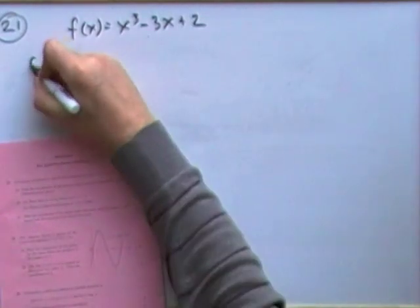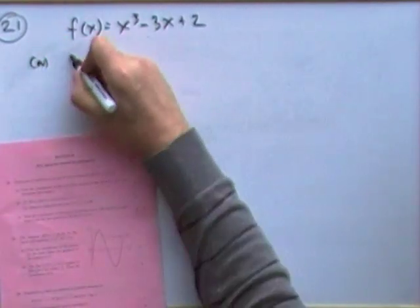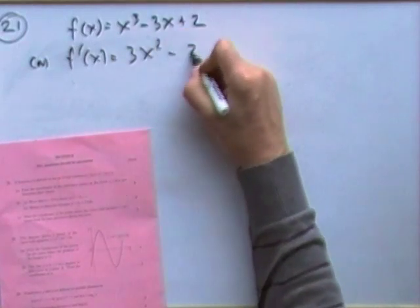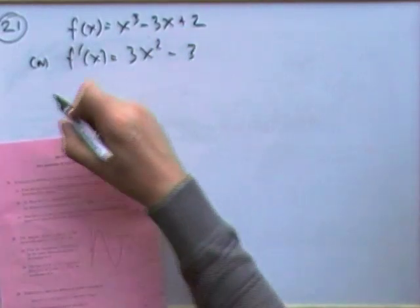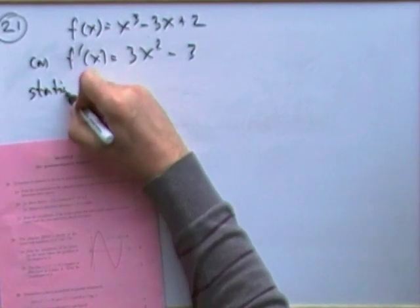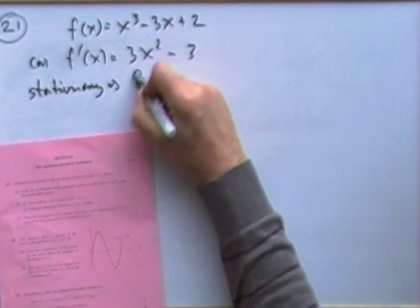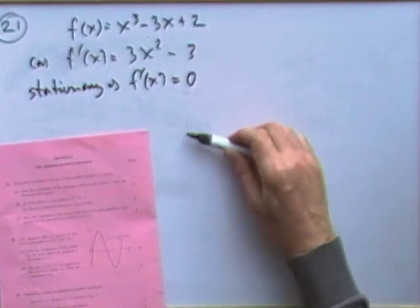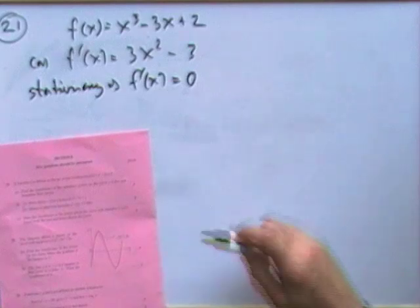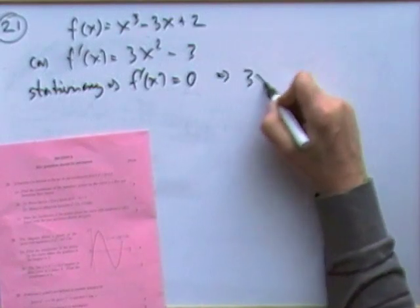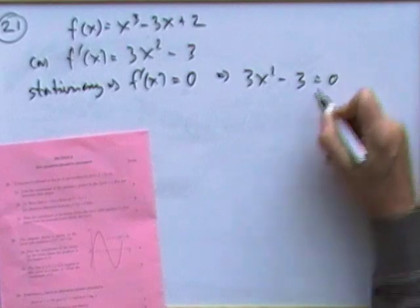Right, first part, stationary points. Differentiate it, so that's going to be 3x squared minus 3. Then make a little statement, however - put down your own preference there. Stationary means that the derivative has to equal 0, because it has to stop climbing and level off, so the gradients have to be 0.